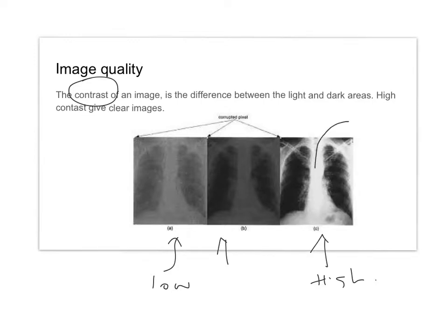Barium sulfate, for example — if you drink it, it will be absorbed by the bones. So as the x-rays go through, the bones will absorb more x-rays, increasing the difference between the two areas. High contrast gives nice, clear images.